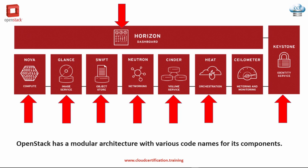Heat is a service to orchestrate multiple composite cloud applications using templates through both an OpenStack native REST API and a CloudFormation-compatible query API. Basically that means you can write templates and scripts in the OpenStack native language, or you can also write them in CloudFormation-compatible templates, which are similar to ones used on AWS — Amazon Web Services.